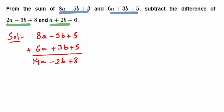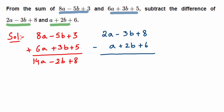Now we subtract the second pair: 2a minus 3b plus 8, minus a plus 2b plus 6. Write like terms below like terms. When subtracting, the signs of the second expression change — positive a becomes negative, positive 2b becomes negative, positive 6 becomes negative.